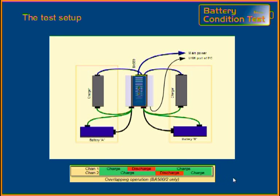If the batteries have a BMS — a battery management system — with external connections, they can be read by the software. Connecting two batteries with their chargers allows an overlap in charge and discharge time and operator handling, resulting in better tester utilization.